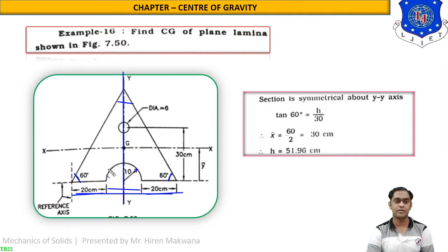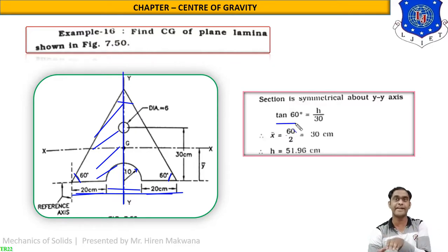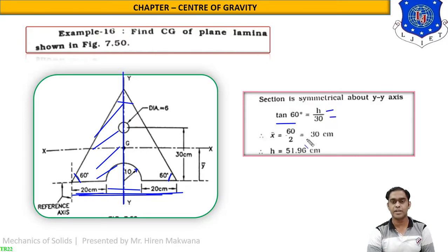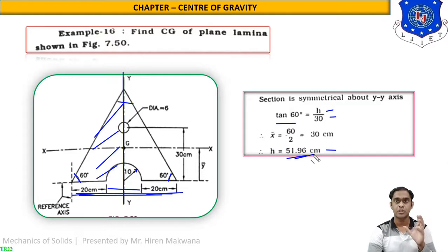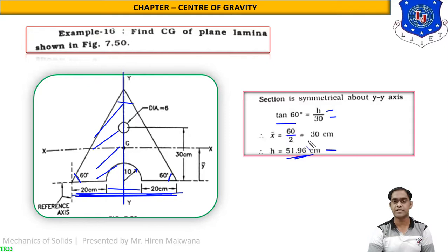From the figure, imagining the right-angle triangle: tan 60° equals height divided by adjacent side, which is half the base, so h/30. From this, h = 30 × tan 60° = 51.96 cm. Since the figure is symmetrical to the y-axis, x-bar = width/2 = 60/2 = 30 cm. So x-bar is 30 cm and h is 51.96 cm.